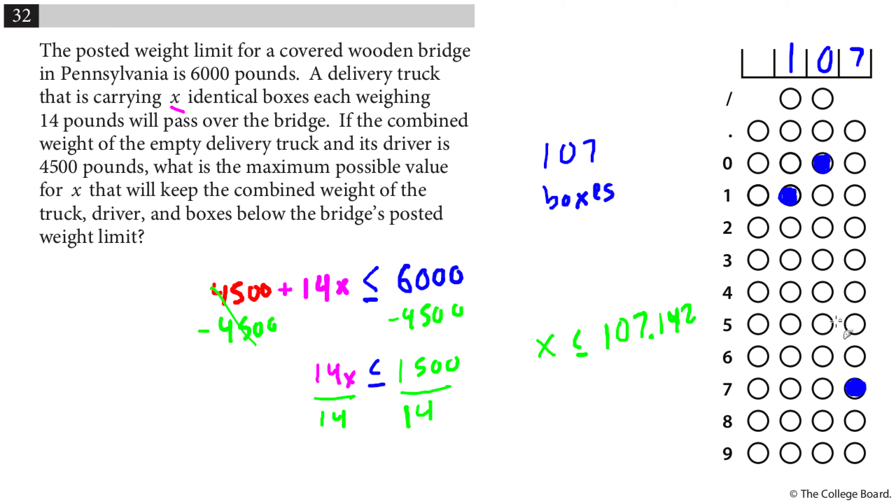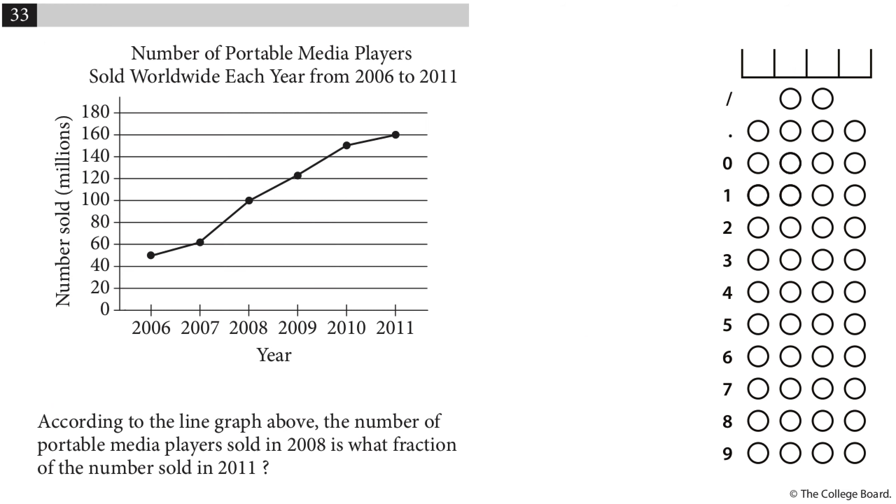You could try to do this a different way by starting at 4,500 and then going up by 14 each time to see - so that's after two boxes, after three boxes. But going up to 107 boxes, I would run out of time here. This is not the best option. Give this a shot.